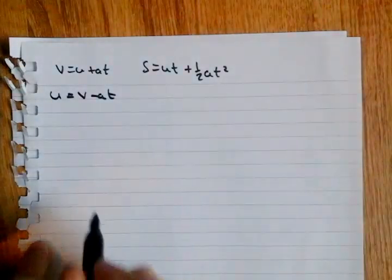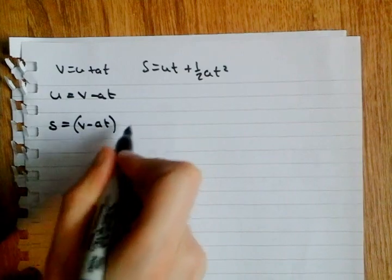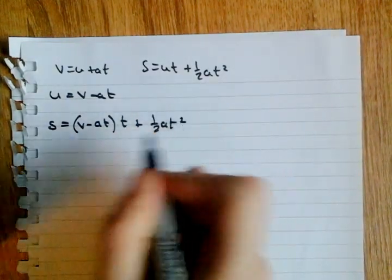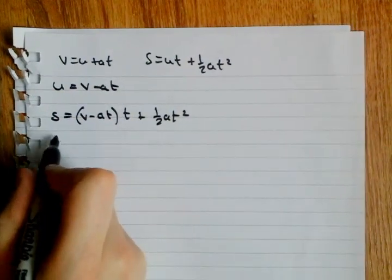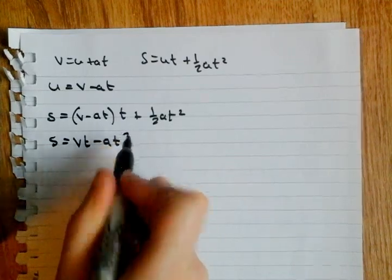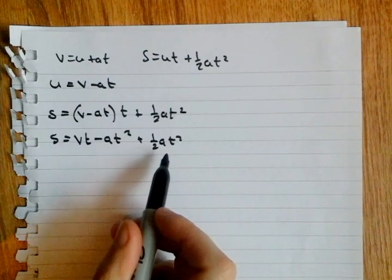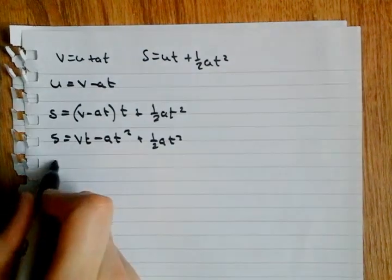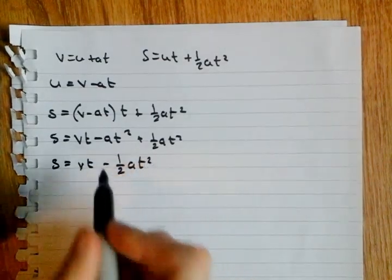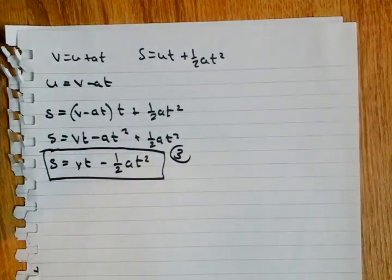So, if I substitute in here, we get S is equal to V minus AT times T plus a half AT². This is equal to S equals VT, if we expand the brackets, minus AT² plus a half AT². S equals VT minus a half AT². The third equation of motion for constant acceleration.